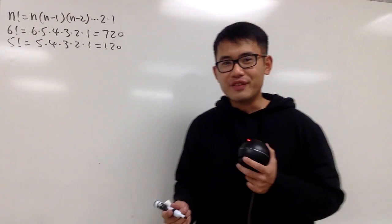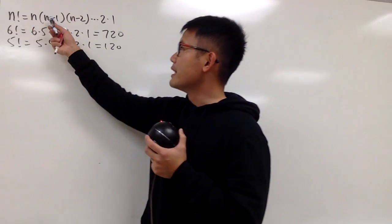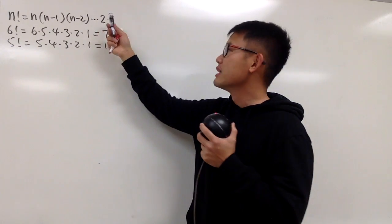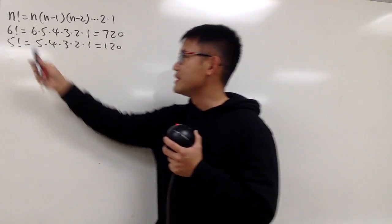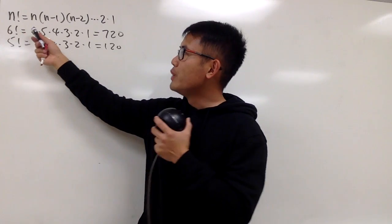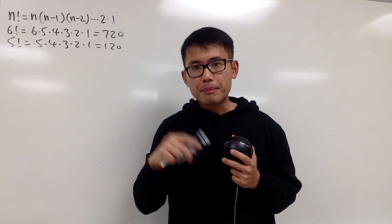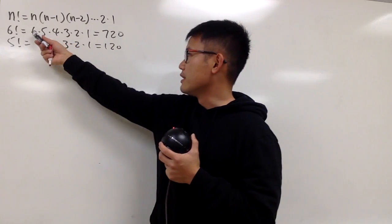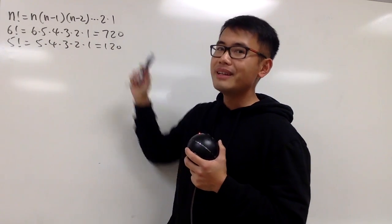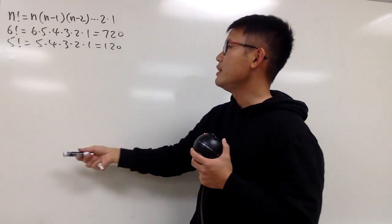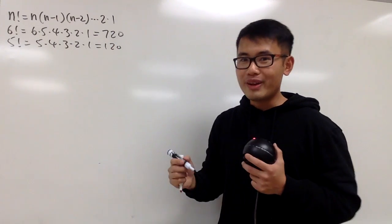As we all know, this is the usual definition of n factorial — that's just n times n minus 1 times n minus 2, and so on, times 2 times 1. For example, when we have 6 factorial, we start at 6 and go down by 1 each time: 6 times 5 times 4 times 3 times 2 times 1, which gives 720. And 5 factorial gives 120.